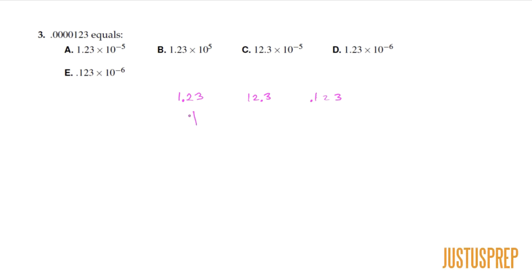So we need it to look like this, 1.23. So we can eliminate all the answer choices that doesn't have 1.23. So this one and this one. And the second rule we want to remember is that since this is a decimal, the exponent has to be negative.